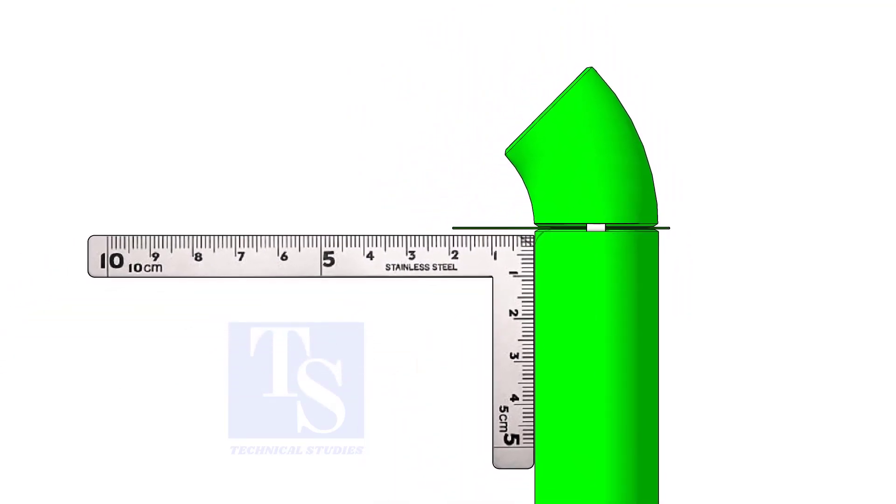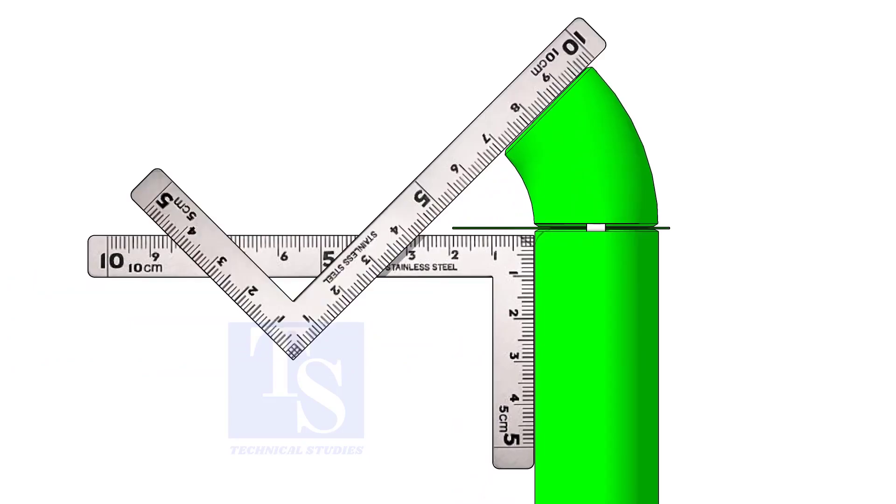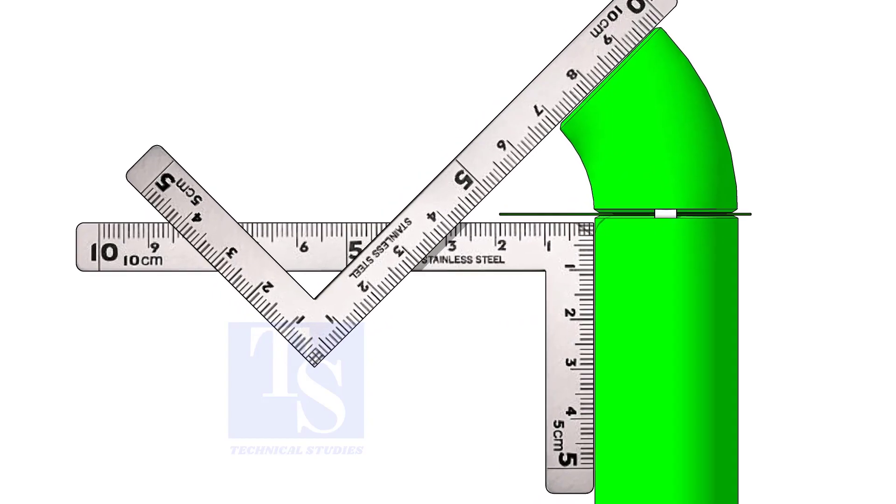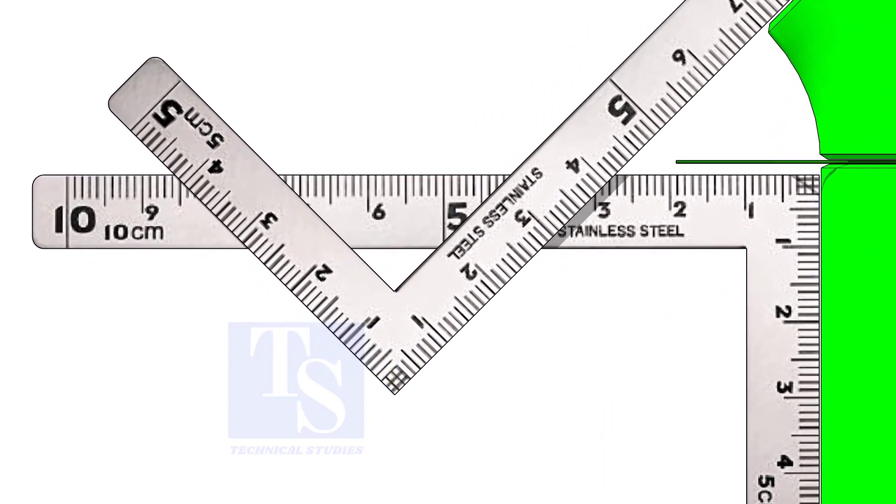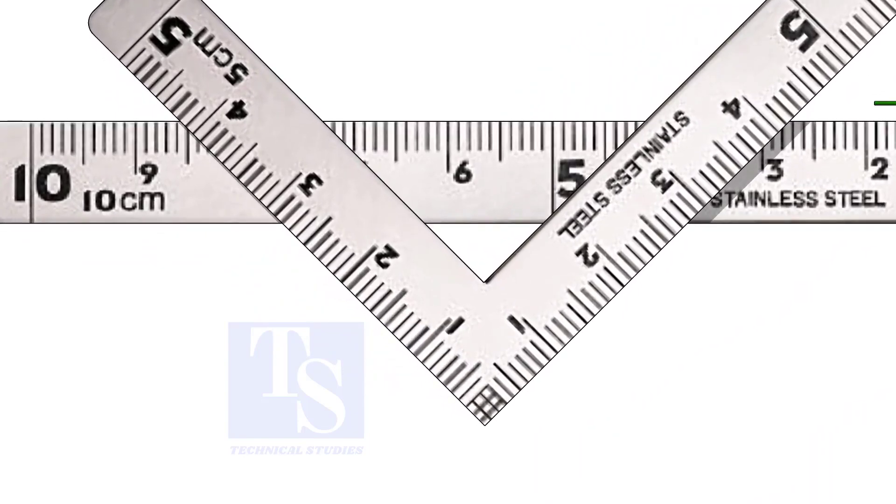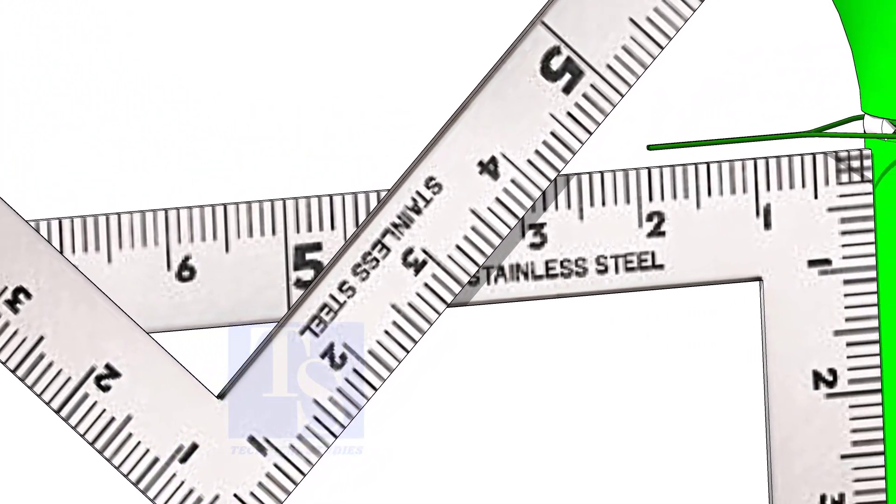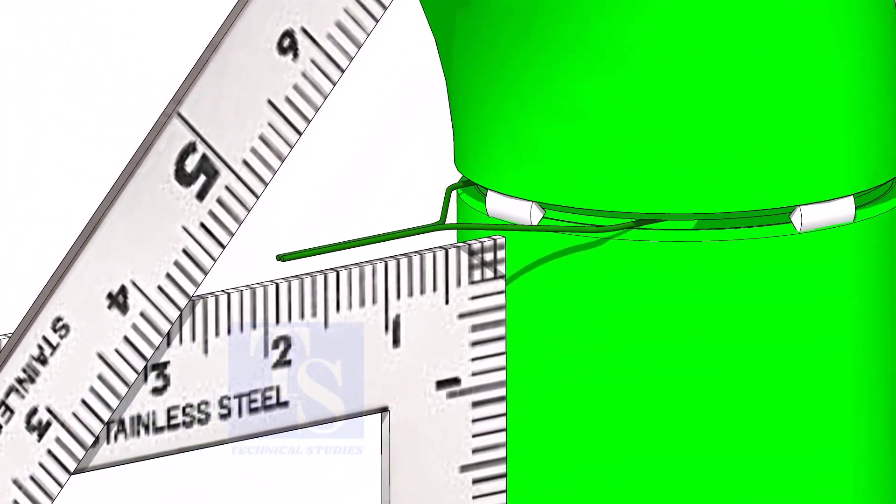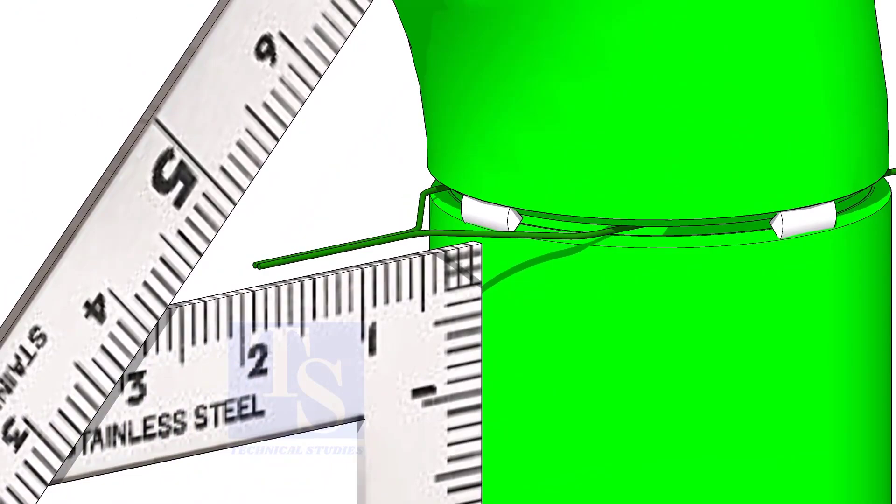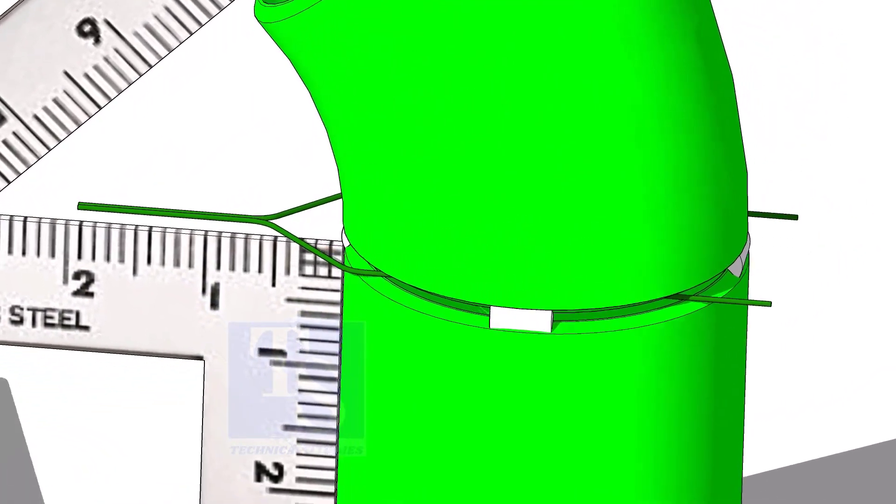Hold two right angles, as shown. If required, rotate the elbow gently to maintain the measurements equal. Tack weld on both sides and complete the welding.